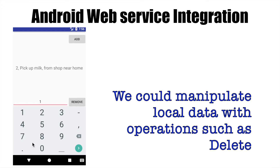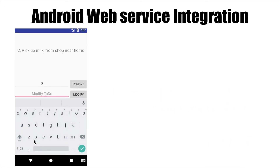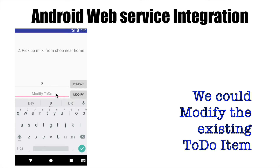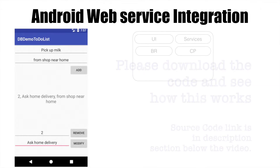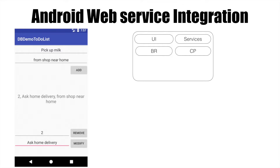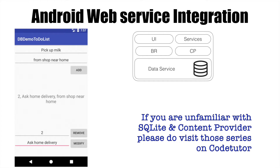There were also scenarios where you could delete the to-do list task and even modify them. We will reuse that particular app but with a difference — we will integrate it with web services. So you basically have a scenario where you have an Android app with UI, services, broadcast receiver, and content provider. You also have a SQLite database, which is probably wrapped with some kind of data service layer that the UI, services, broadcast receiver, or content provider might use to update the database.